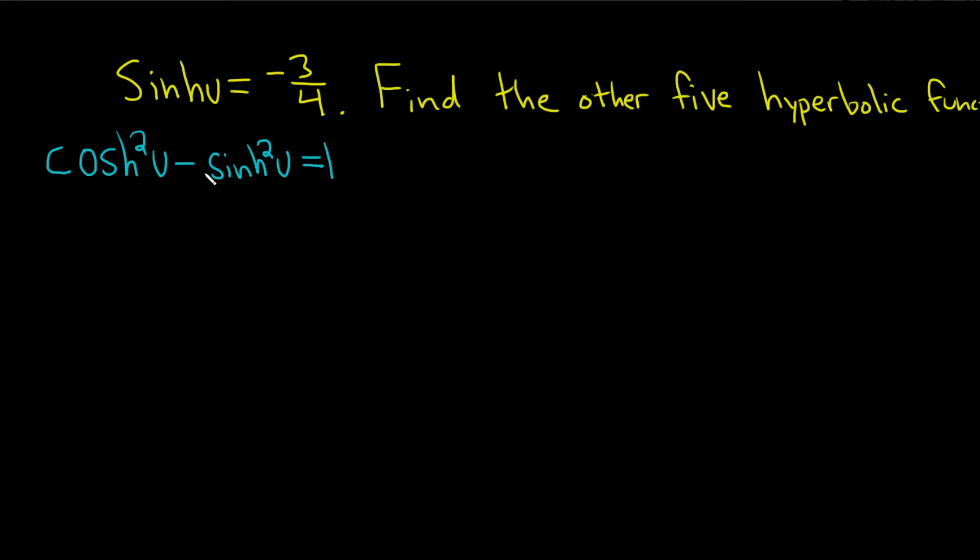So let's go ahead and plug in the sinh(u) into this identity. So cosh²(u) minus, and sinh(u) is negative three-fourths, so this is negative 3 over 4, and the whole thing is squared, and this is equal to 1.